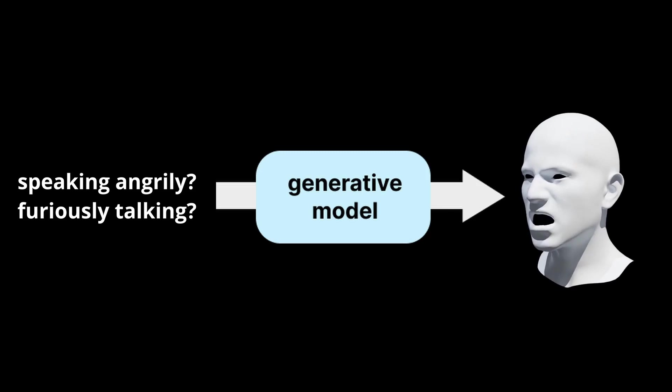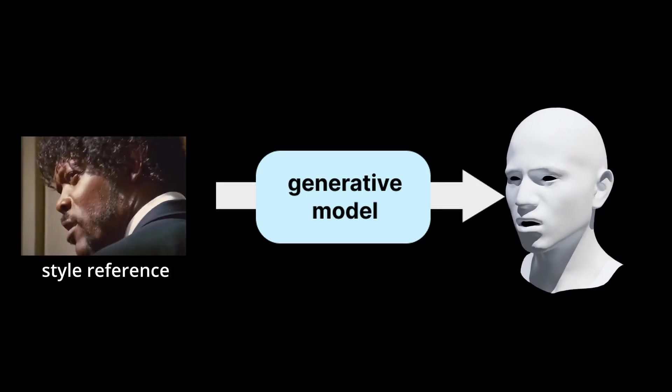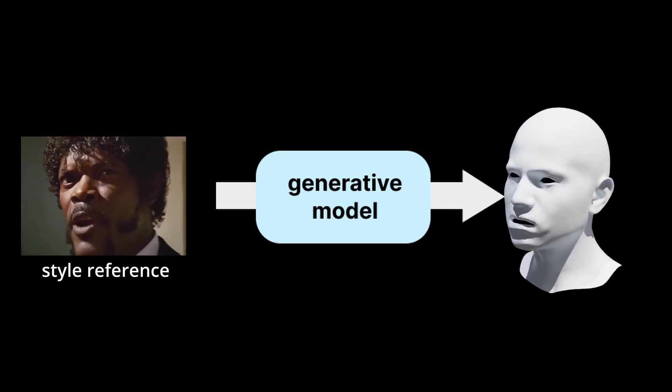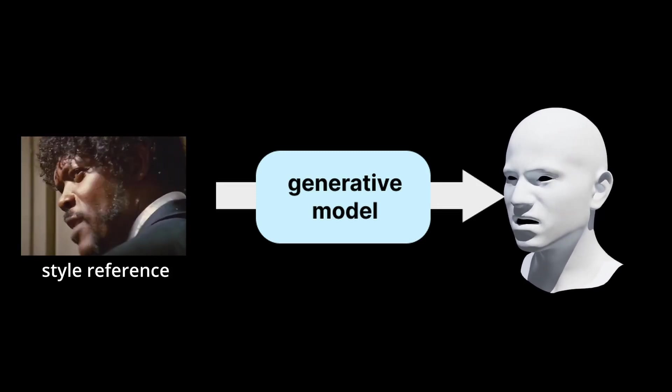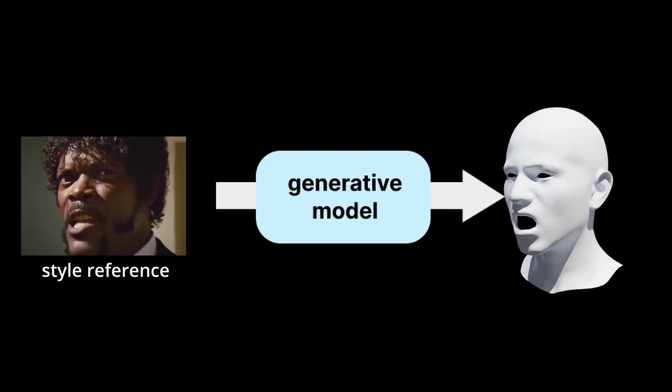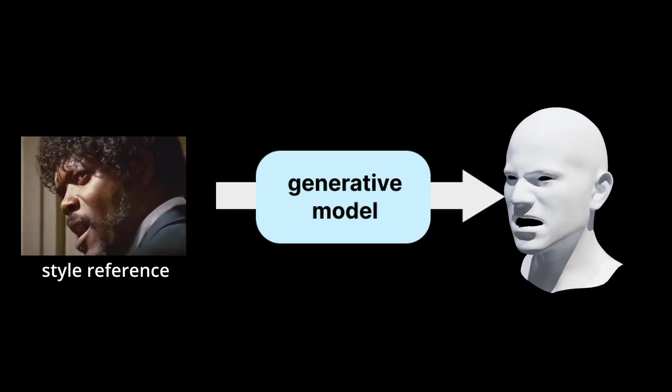Facial motions are often nuanced and difficult to describe in words, making it difficult for an artist to communicate their intent to a motion generation model. For this reason, we propose Model C Model Do, a framework using a style reference to control the speech style of audio-driven 3D lip sync animation.